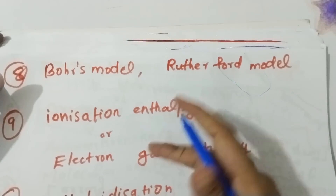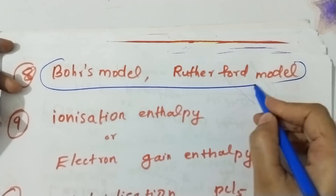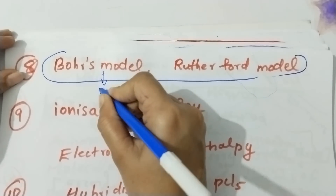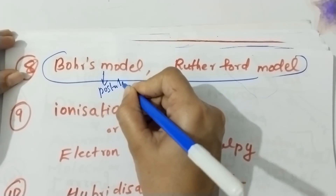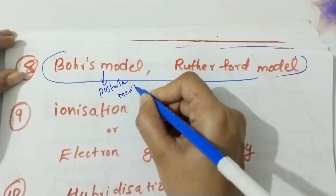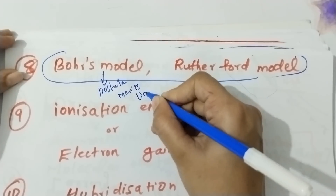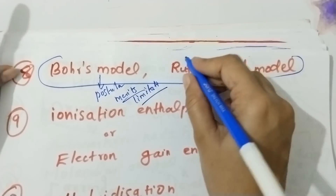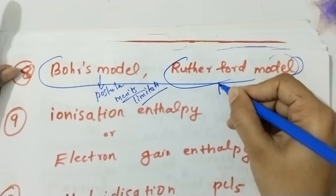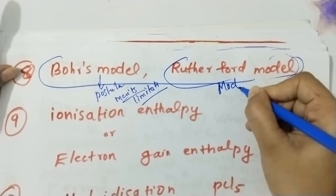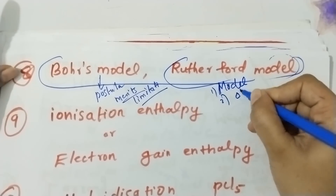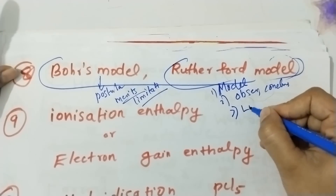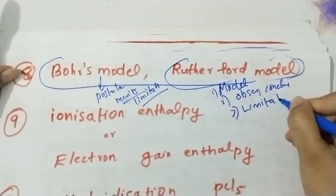This is the Bohr Model of the atom and the Rutherford Model. The Bohr Model postulates: what are the postulates? What are the merits of the Bohr Model? What are the limitations? Rutherford's nuclear model of the atom — you have to explain the observations, conclusions, limitations, and drawbacks.